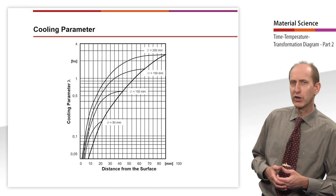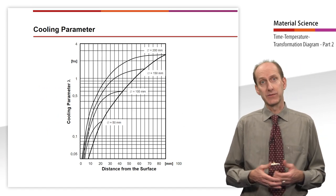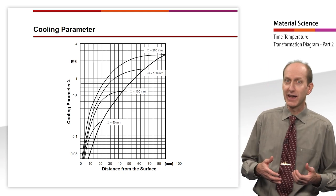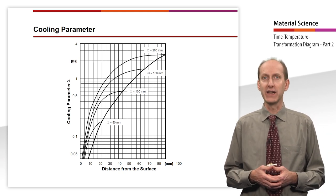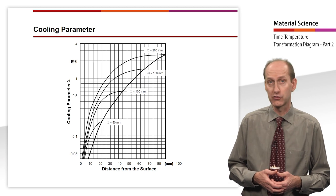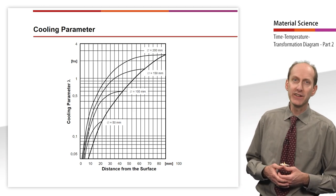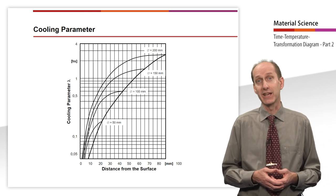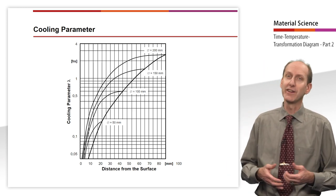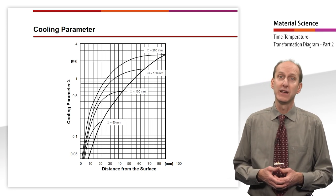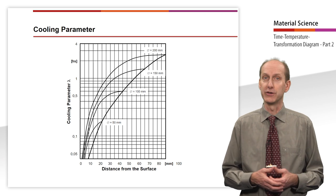Since all metallic workpieces with which a heat treatment is to be carried out have a finite thickness, the cooling rate naturally varies over the cross-section of the sample. However, if this is to be taken into account and planned, it is necessary to know the cooling curve or cooling rate at the relevant points of the cross-section of a component.